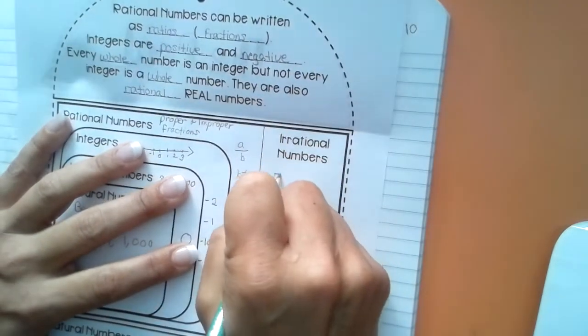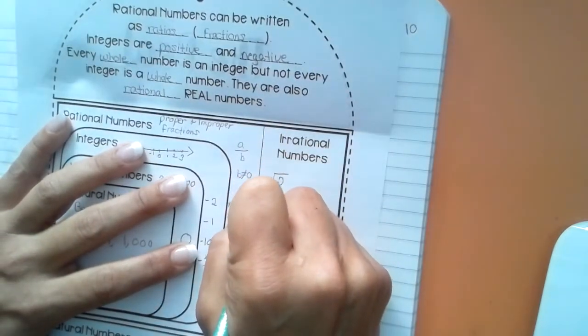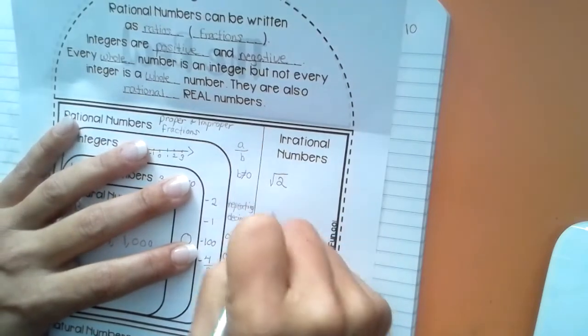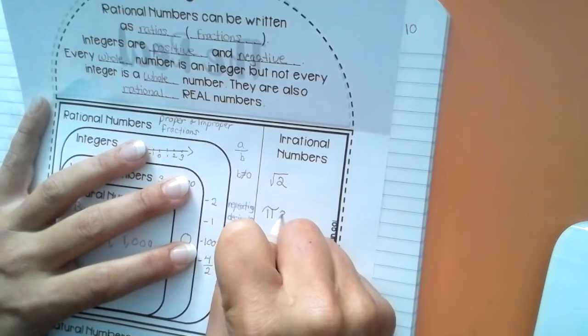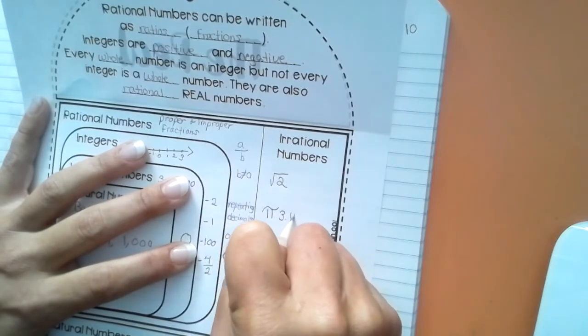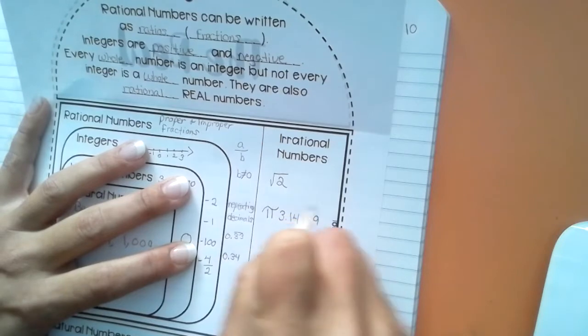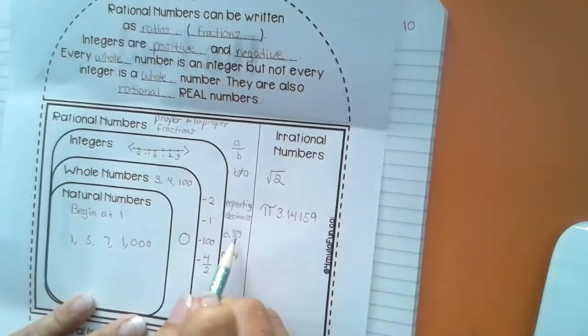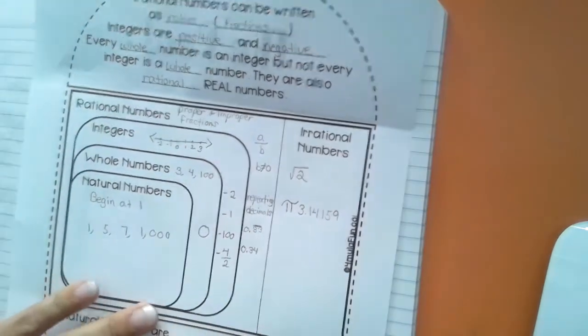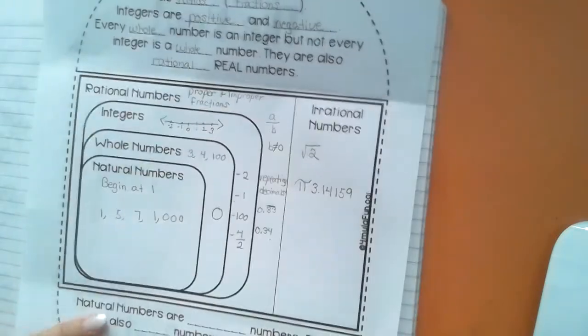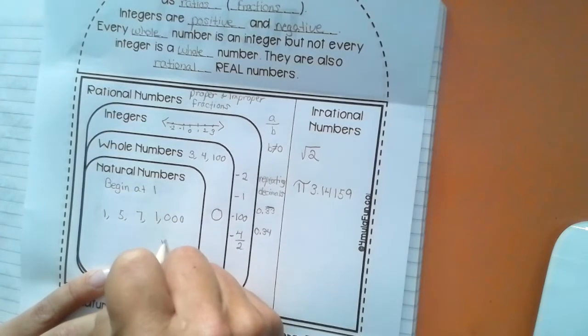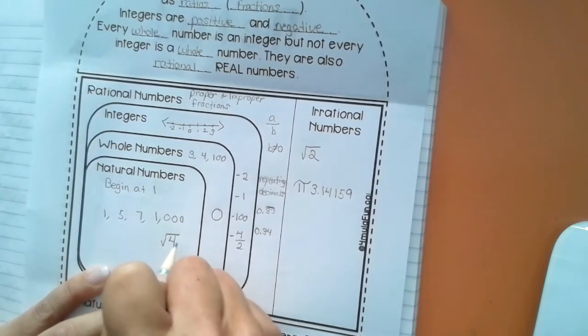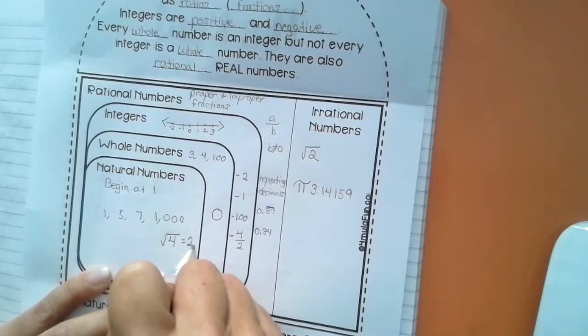Our irrational numbers are square roots that cannot be broken down any further and decimals that repeat. Or excuse me, decimals that do not repeat like pi. It doesn't stop. It's not a repeating decimal like this one. So those are just a few. And I would say that a natural number could even be the square root of 4 because that equals 2.